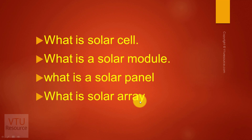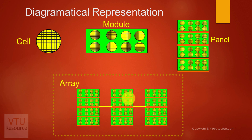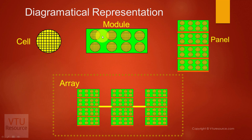Let us see the diagrammatical representation of solar cell, solar module, solar panel and solar array. This is a PV cell or solar cell. This is a module. You can see the PV cells are mounted on a structure.